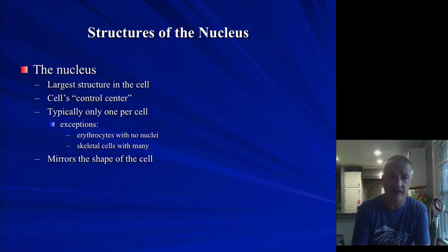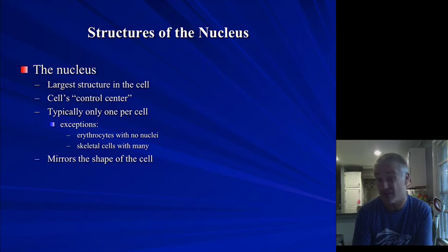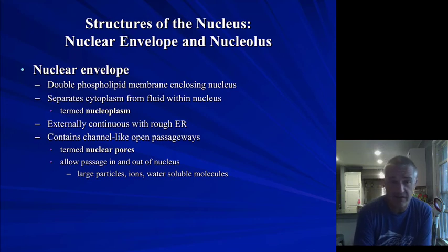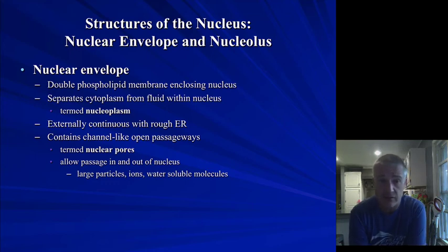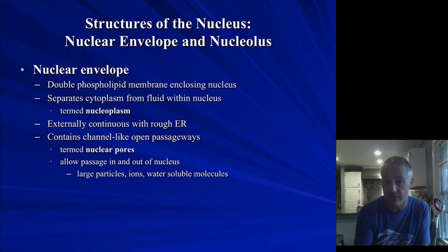The last thing to talk about is the nucleus — the largest structure in the cell and usually the easiest thing to see. It is the CEO or control center of the cell. Usually there is one per cell, though certain skeletal muscle cells have multiple ones, and certain cells like red blood cells do not have nuclei at all. The nucleus has a phospholipid bilayer surrounding it called the nuclear envelope, which is much more selective than the cell membrane. The fluid inside is the nucleoplasm, and there are little openings called nuclear pores that act like an assistant determining what can get into the CEO's office.